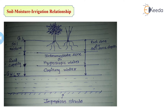Field capacity is defined as the moisture content of the soil after free drainage has removed most of the gravity water. We are going to discuss all these points in a proper manner.